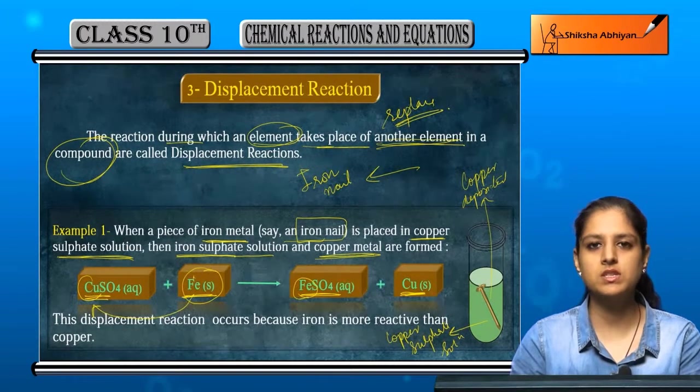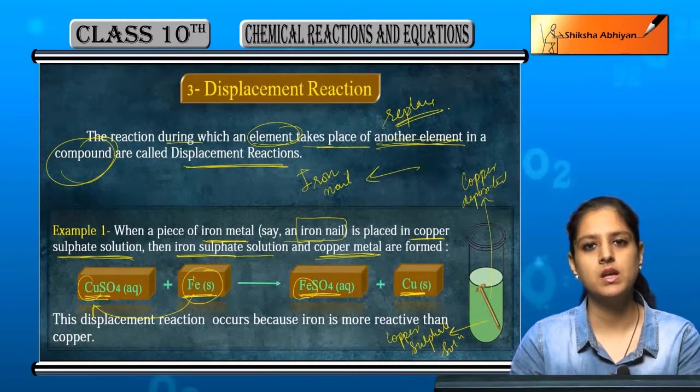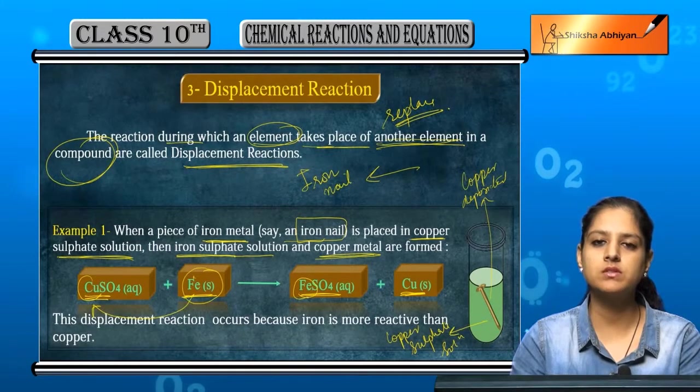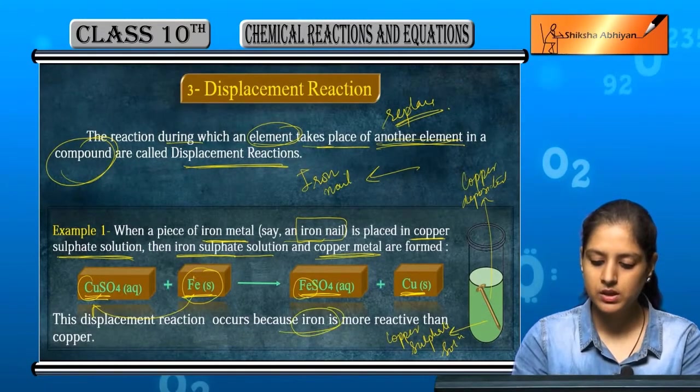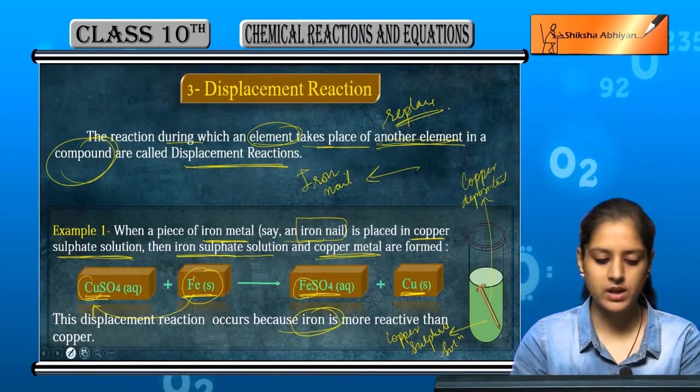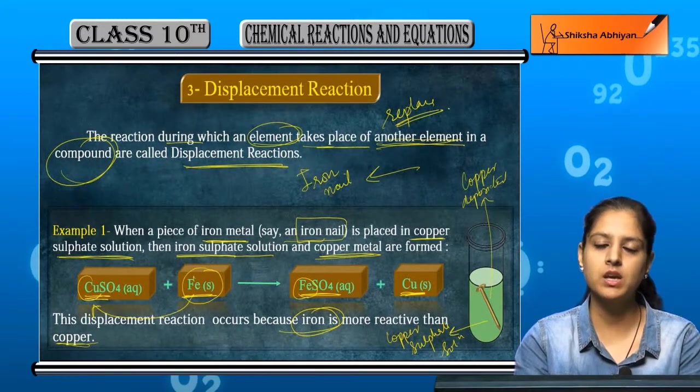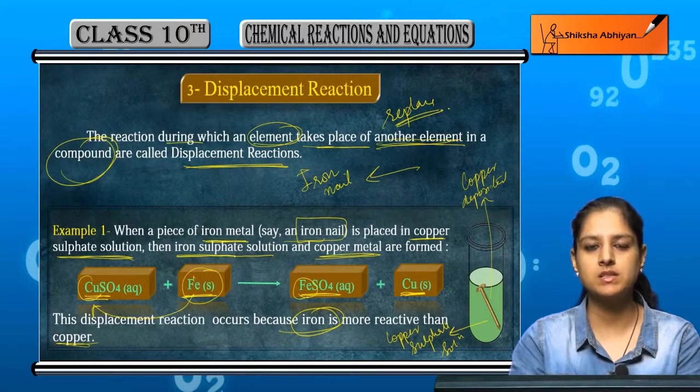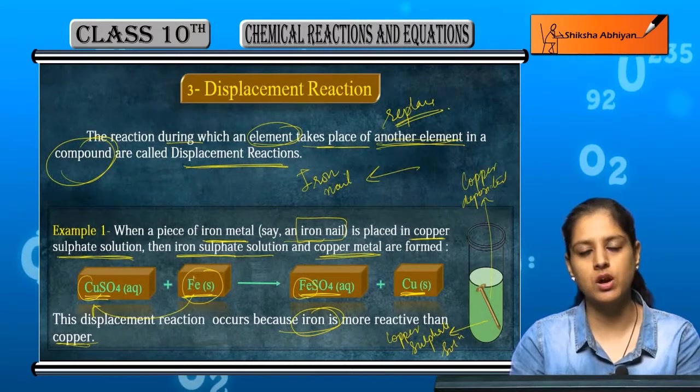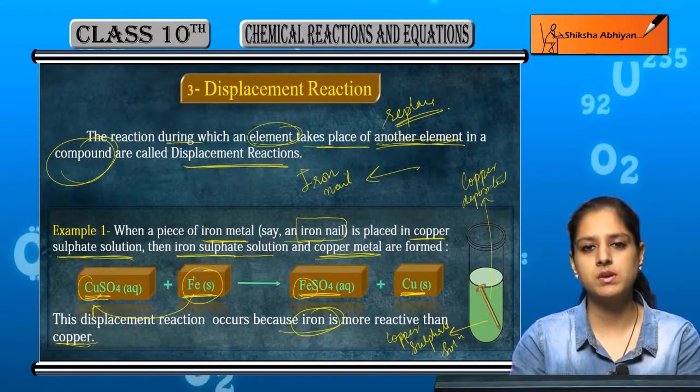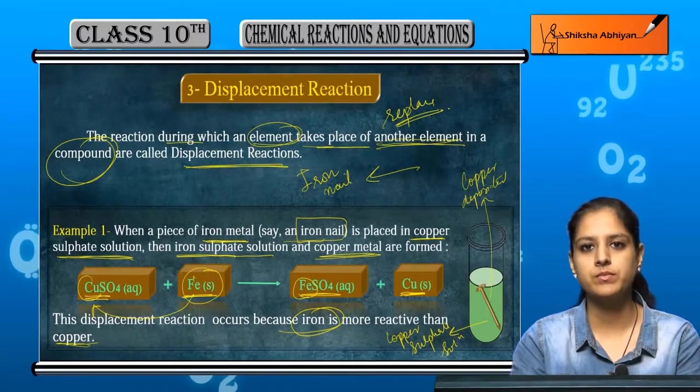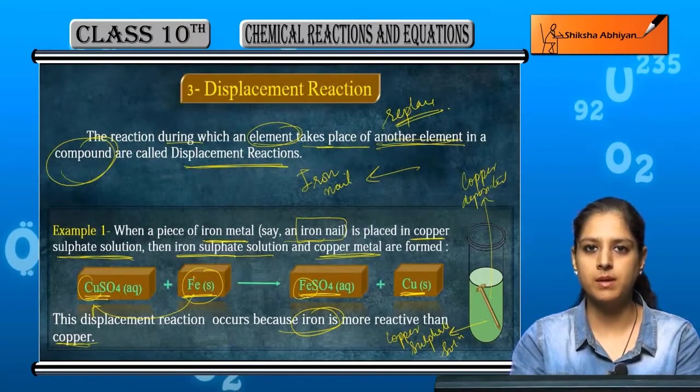This is a displacement reaction, but displacement reaction is only possible because in this case, iron is more reactive than copper. Only the element which is more reactive will displace. If it is not reactive, the displacement reaction will not occur. Let us have a look at some examples.